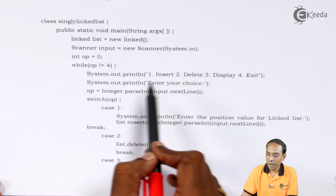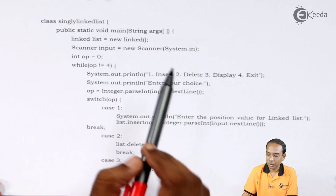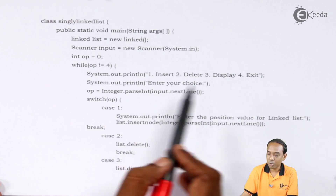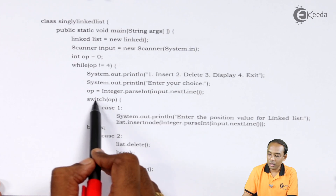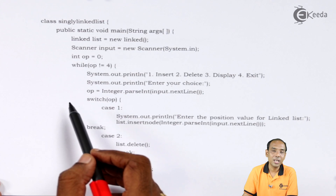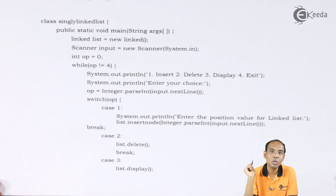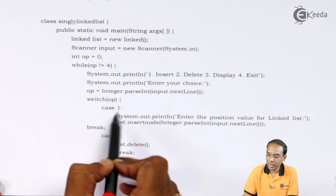Then I am going to ask the user for his choice and store that choice into the op variable. I write down 'enter your choice', take the value from input, and transfer that value to the op variable. Then I make use of a switch case. As you may be aware, in a switch case only one case is executed at a time. Based on the operation which the user wants to perform I will execute that particular case. So I write down switch op, then I take the cases.